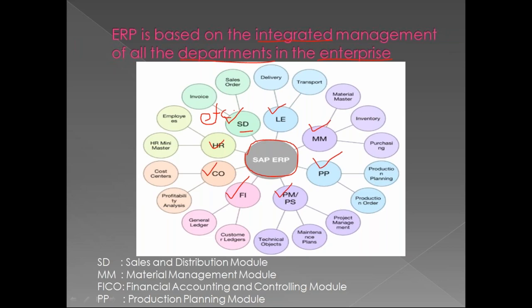In SAP SD - Sales and Distribution - the department works closely with customers. SD will identify customers, get orders from them, sell products, create deliveries, manage transportation, raise invoices, and collect payment once delivery is done. These are the activities done under SD.